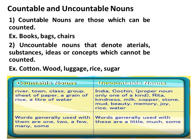Now, looking at the table of countable and uncountable nouns. Countable nouns include: river, town, class, group, sheet of paper, a grain of rice, a litter of water. Words generally used with countable nouns are: one, two, a few, many, some. Uncountable nouns include: India, Cochin (proper nouns — one of a kind), kindness, milk, copper, stone, mud, beauty, memory, joy, rice, water. Words generally used with uncountable nouns are: a little, much, some — these you must remember.